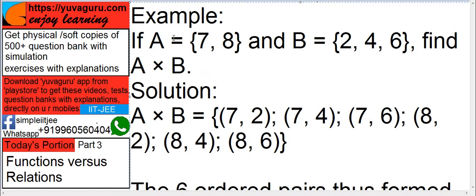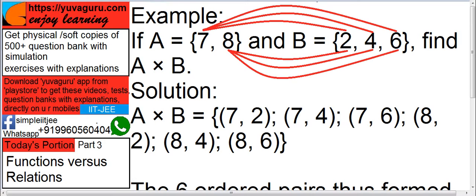Let's see an example. If A is the set {7, 8} and B is the set {2, 4, 6}, we have to find out A cross B. It means Cartesian of A and B. See here, to find the Cartesian, we have to group each element of A with each element of B.